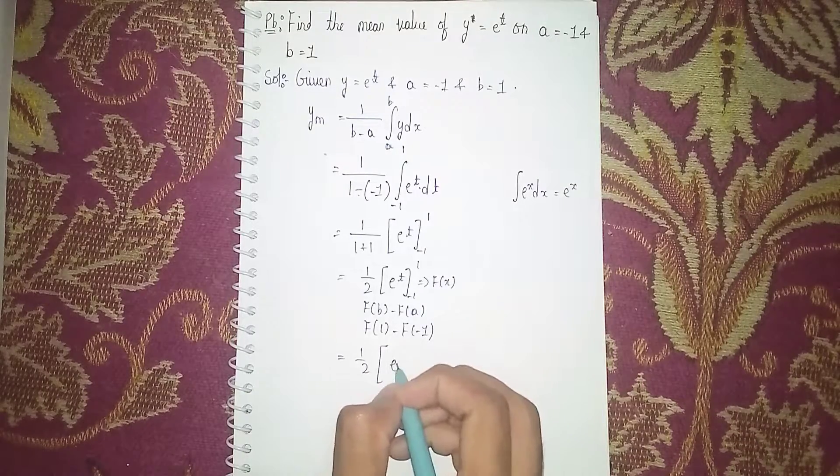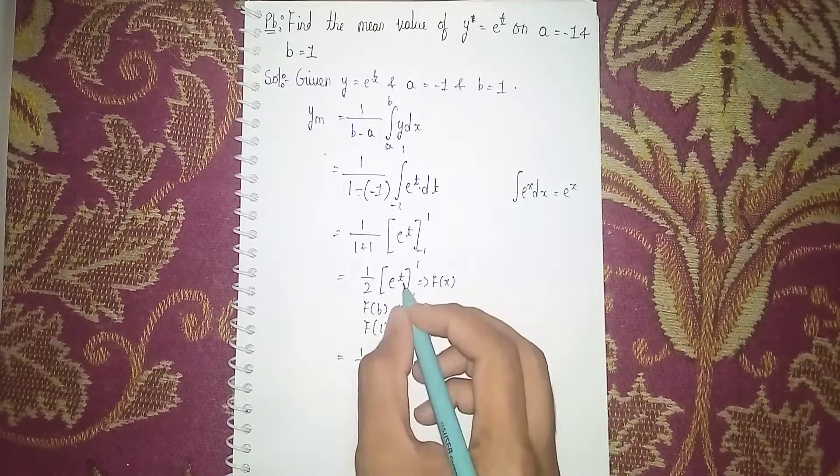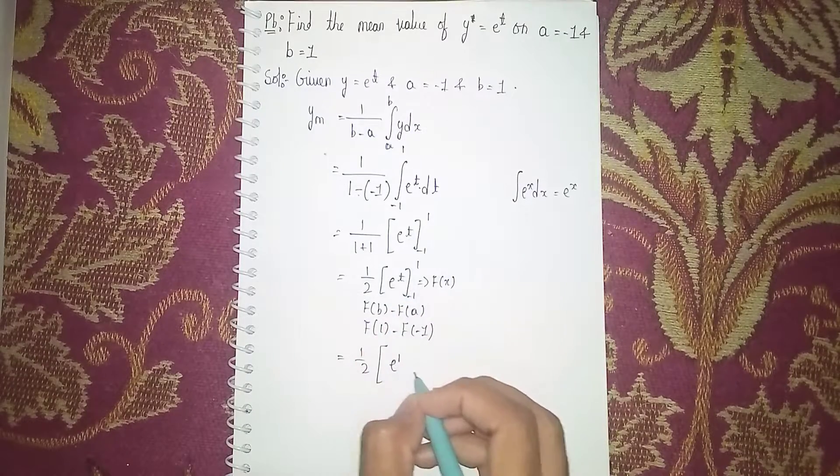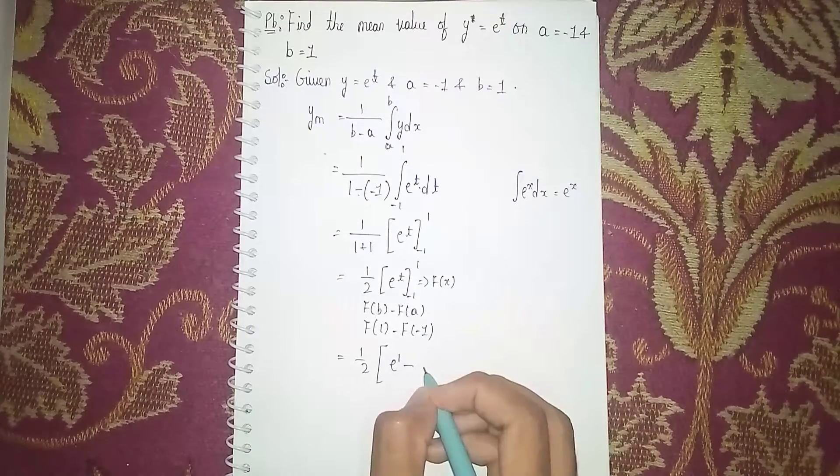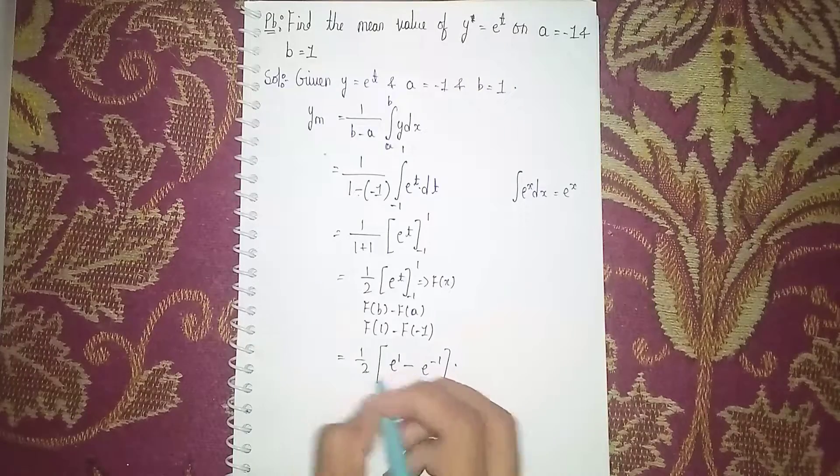e power 1, instead of t we are putting 1, minus e power minus 1. Now here 2 goes in denominator, so it becomes e power 1 minus e power minus 1, all by 2.